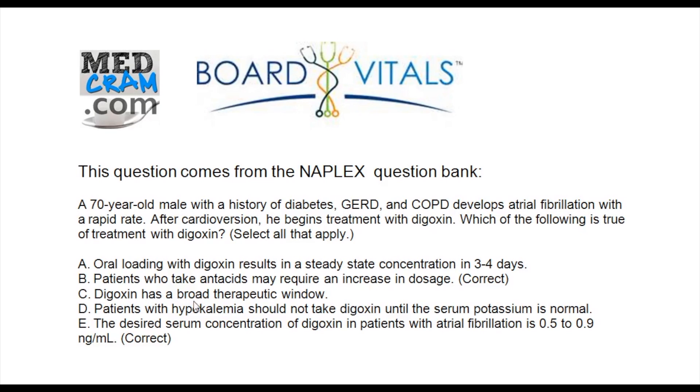Digoxin has a broad therapeutic window? Not the case. It has a narrow therapeutic window, specifically 0.5 to 0.9 nanograms per ml. That's the second correct answer. Patients with hypokalemia should not take digoxin until the serum potassium is normal? While hypokalemia can increase arrhythmogenicity of digoxin, it's not a reason to not take digoxin. We just need to watch and make sure the patient doesn't become too high on the digoxin levels. So the answers are B and E. Thanks for joining us.